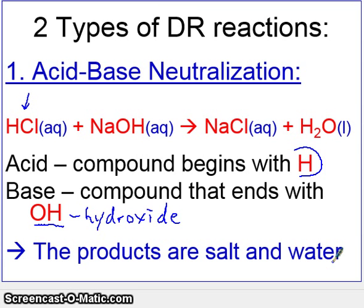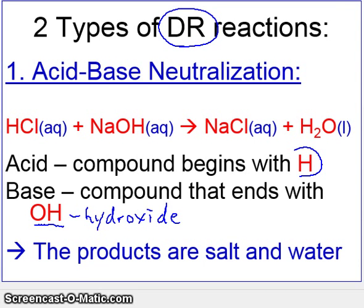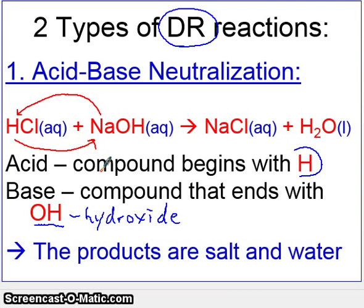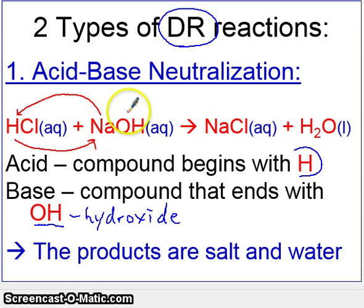Let me show you how this is a double replacement reaction. Remember that the metal of the first compound replaces the metal of the second compound, and the metal of the second replaces the metal of the first. Hydrogen, even though it's not a metal, acts like a metal because it sits together with the group 1 elements. So hydrogen will replace sodium, and sodium replaces hydrogen. On the right side, sodium is now with chlorine — sodium used to be with hydroxide.